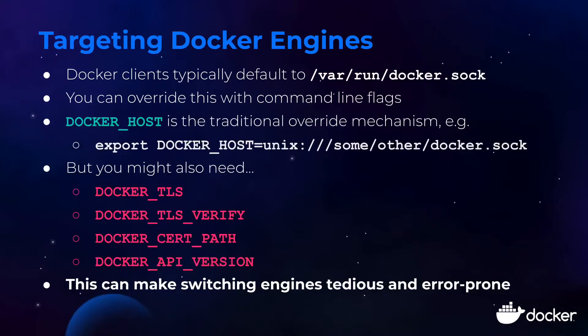So how would you do that? By default, Docker clients are going to try to access the Docker engine by connecting to /var/run/docker.sock, which is a Unix domain socket. Docker Desktop does some magic to make this work with its Linux VM, so it's a little bit different there, but that's the default behavior.